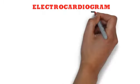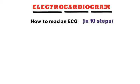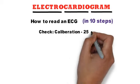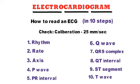ECG, or electrocardiogram, is the graphical representation of electrical activity going on in the heart. Before reading an ECG, check the calibration or speed of the machine, which is normally set at 25 mm per second. We will discuss ECG interpretation in this manner: Rhythm, Rate, Axis, P-wave, PR interval, Q-wave, QRS complex, QT interval, ST segment, and T-wave.